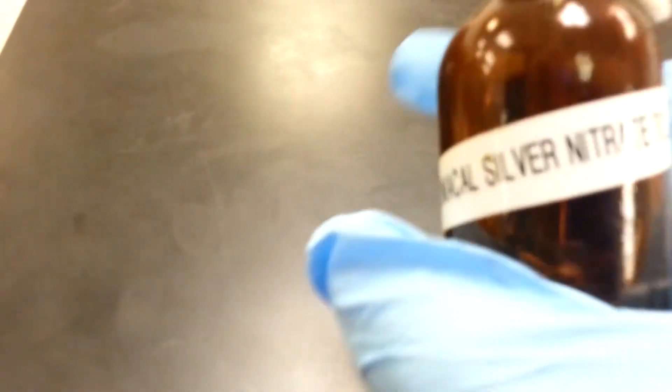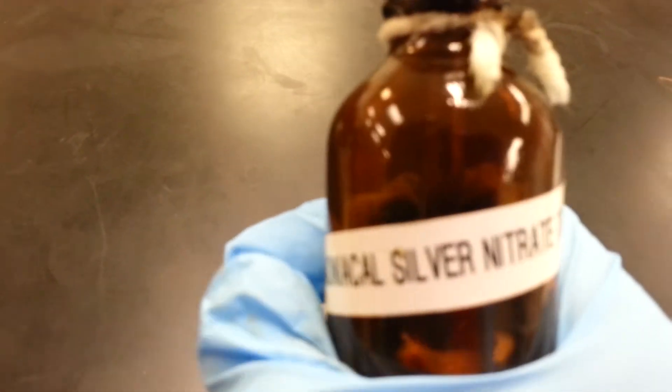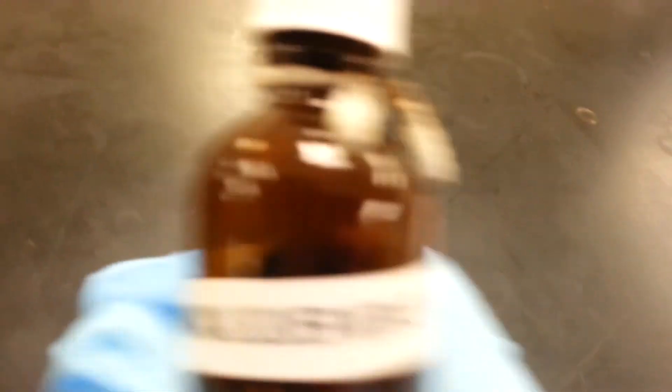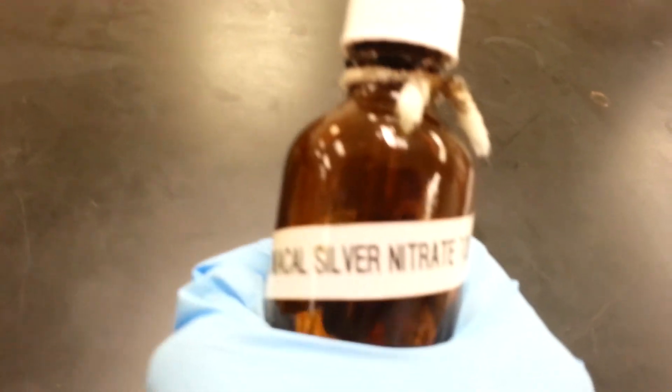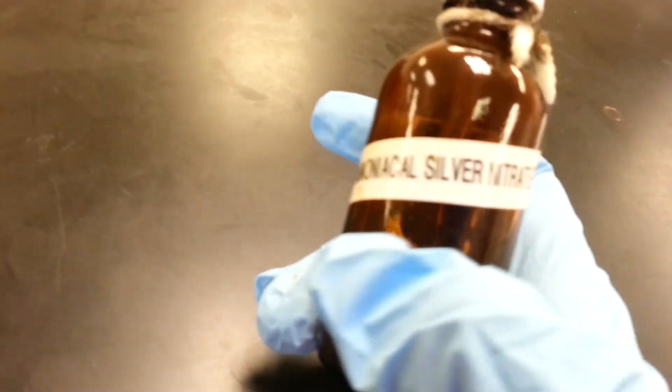The thing is, you need to know about Tollens, you do not, of course you should never pour chemicals down the drain anyways, but this one you definitely do not, because it forms silver fulminate or something. If you pour it down the drain, you could cause an explosion. In fact, you can't even store this for a long time. That's why we make small amounts, so they use all of it.